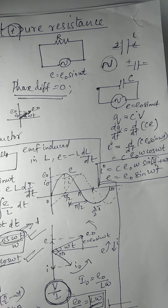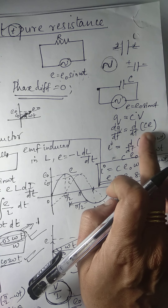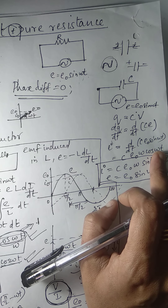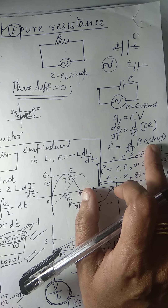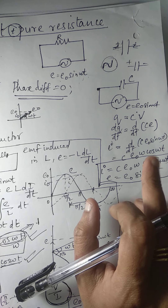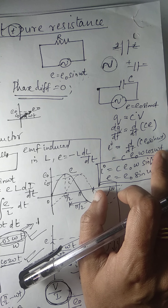One more thing: cos(ωt) can be written as either sin(90° − ωt) or also sin(90° + ωt). But here we have chosen sin(90° + ωt) because after differentiating we are getting ωt as positive — ωt is positive. We can write it as sin(90° + θ).